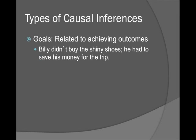Goal-related cues get at motivation for achieving an outcome — these are all the soap opera cues. For example: 'Billy didn't buy the shoes because they had to save the money for the trip.' We're reserving money for something else, so we don't buy the thing now.